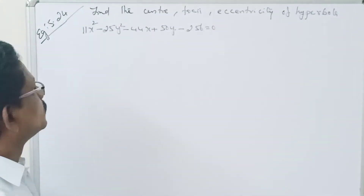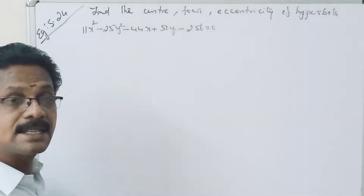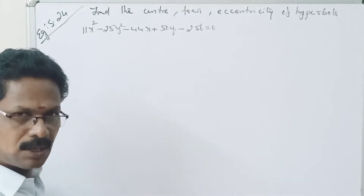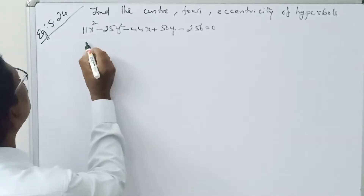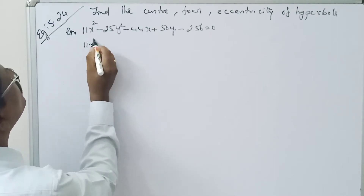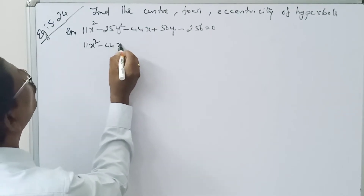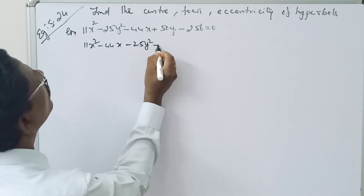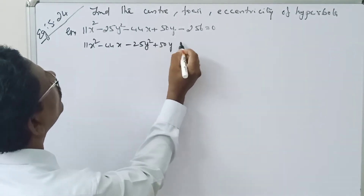Welcome. We need to find the center and foci of the hyperbola. The given equation is 11x² minus 44x minus 25y² plus 50y equals 256.